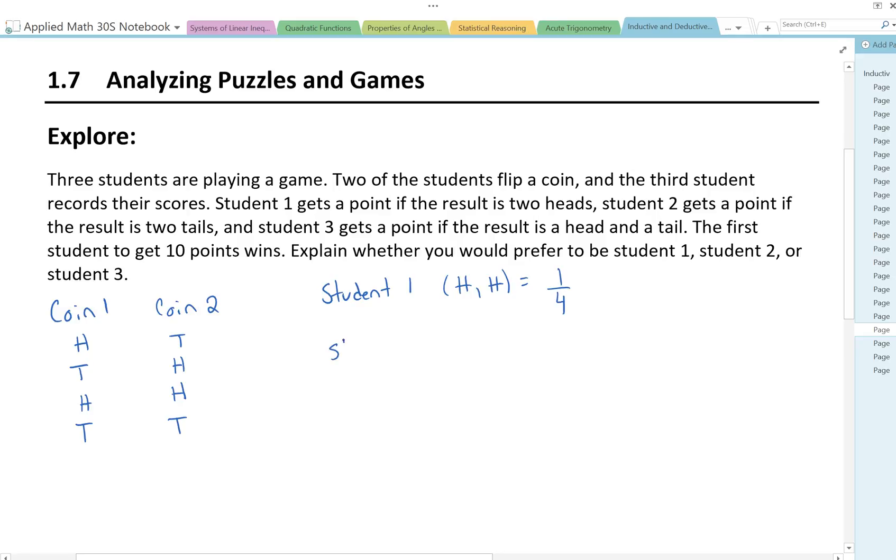For student 2, they get a point if the result is two tails. Well, the probability is the same. There's still only one outcome out of a total of four that would be two tails.